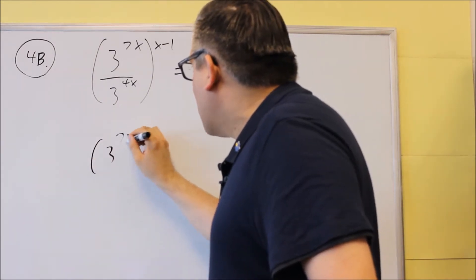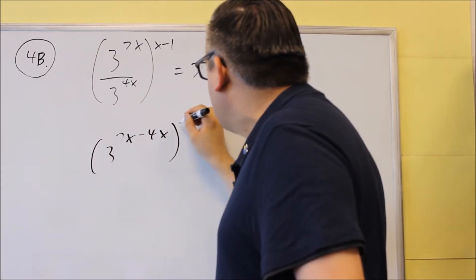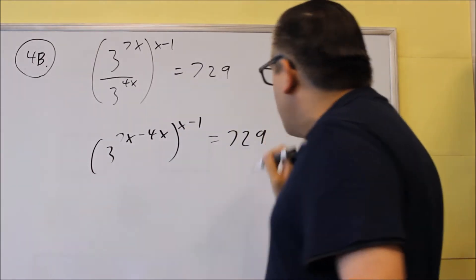So we're going to do 3 to the 7x minus 4x, and that will equal 729.